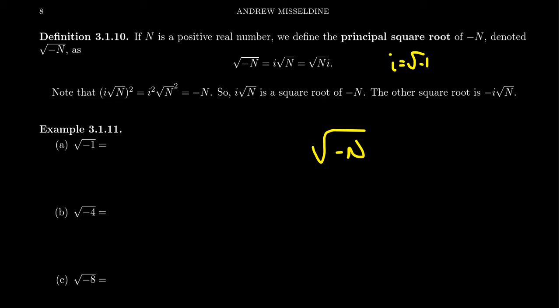And notice, of course, that when you square this number, you're going to end up with an i squared times the square root of N squared, where i squared is negative 1, and then the square root of N, or as in the positive number, the square root of N is already a real number, you get N, and thus you end up with a negative N. So this number is a square root of negative N. It's the principal square root.